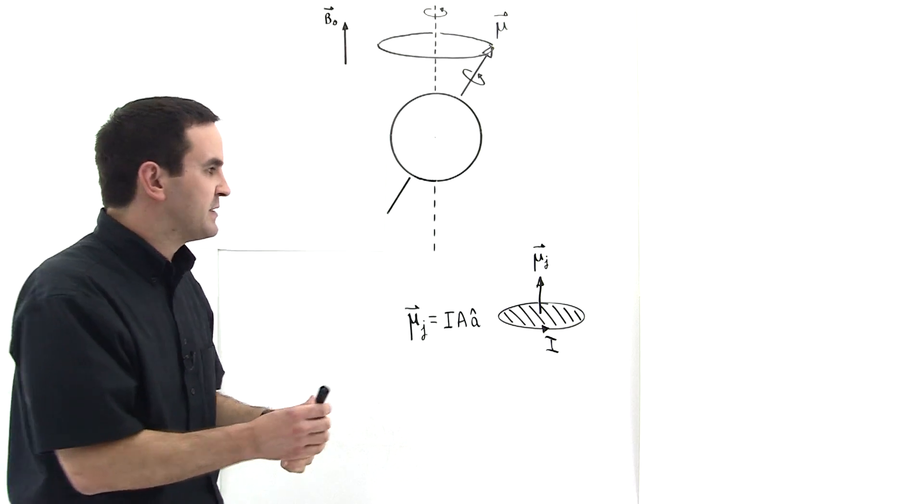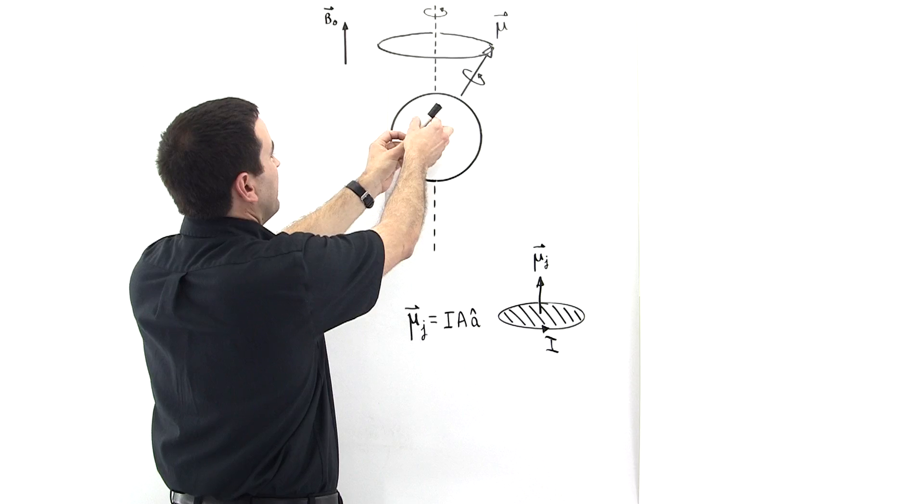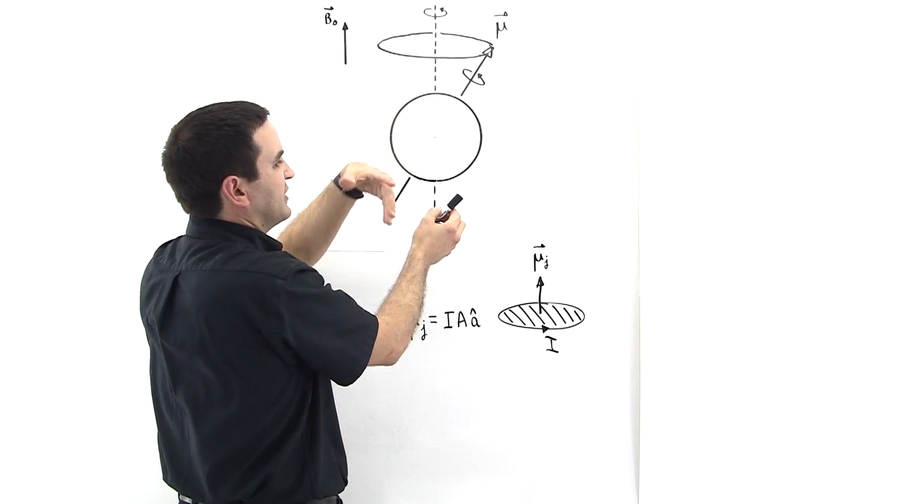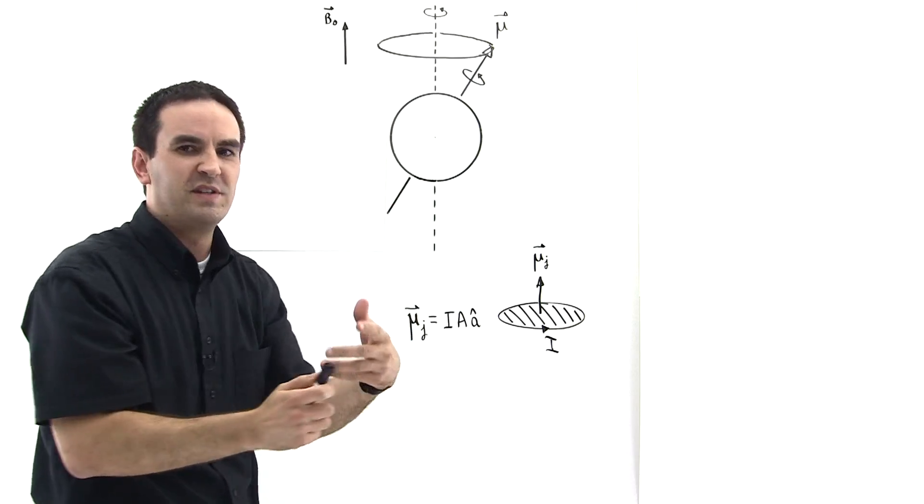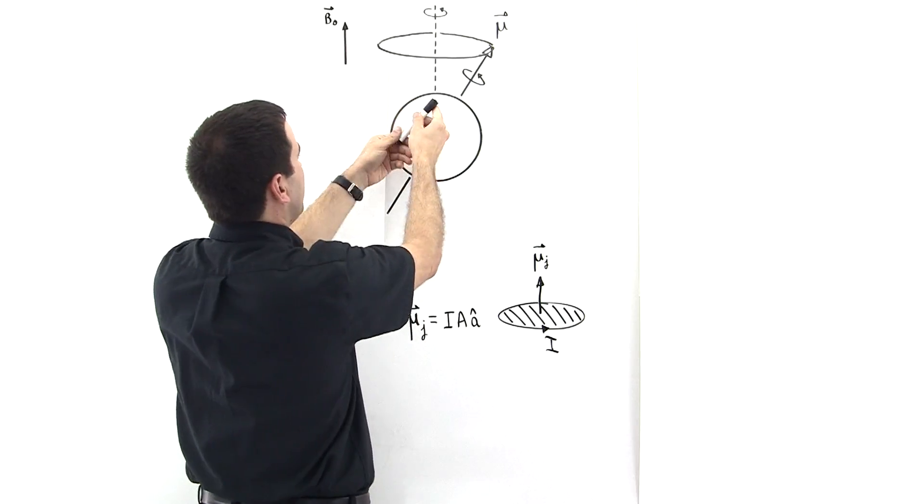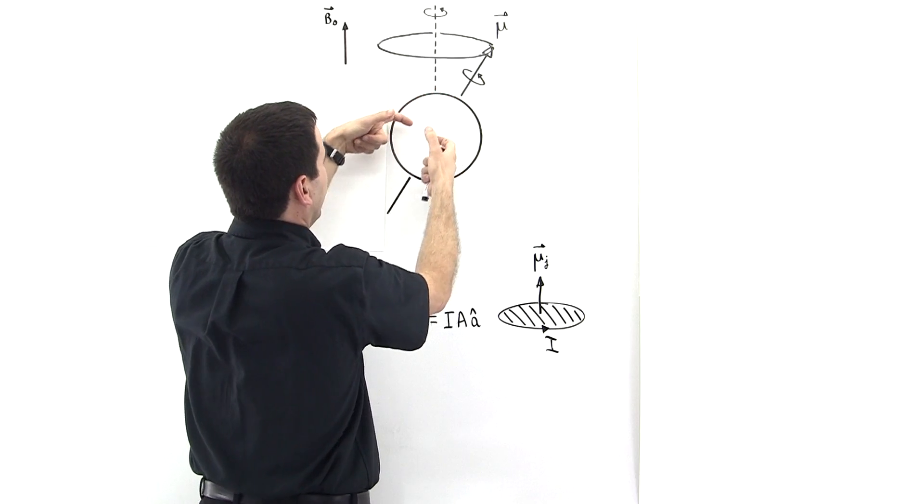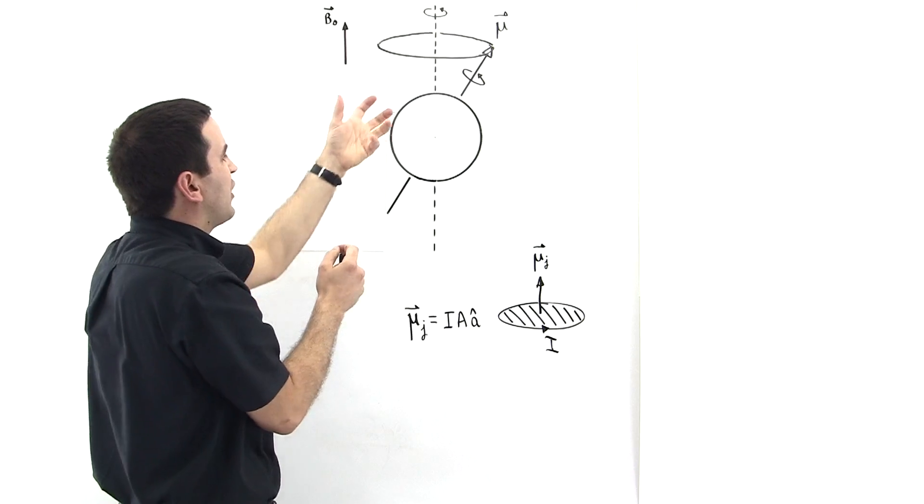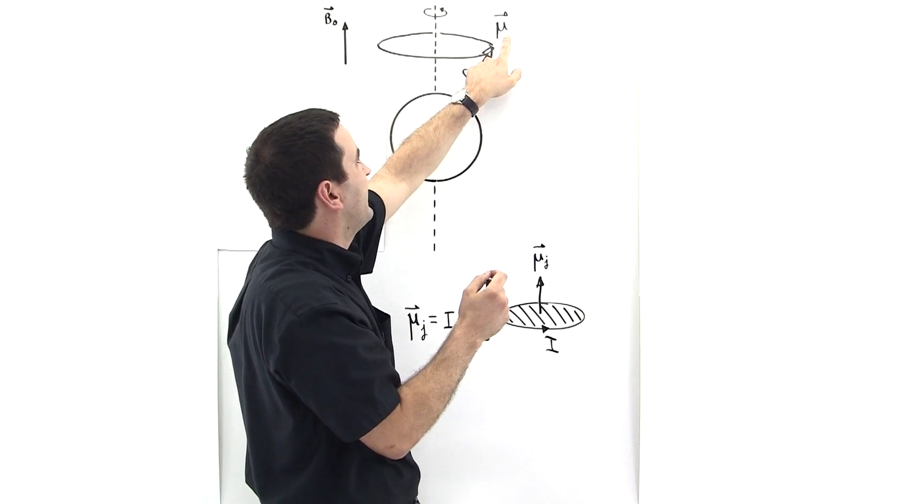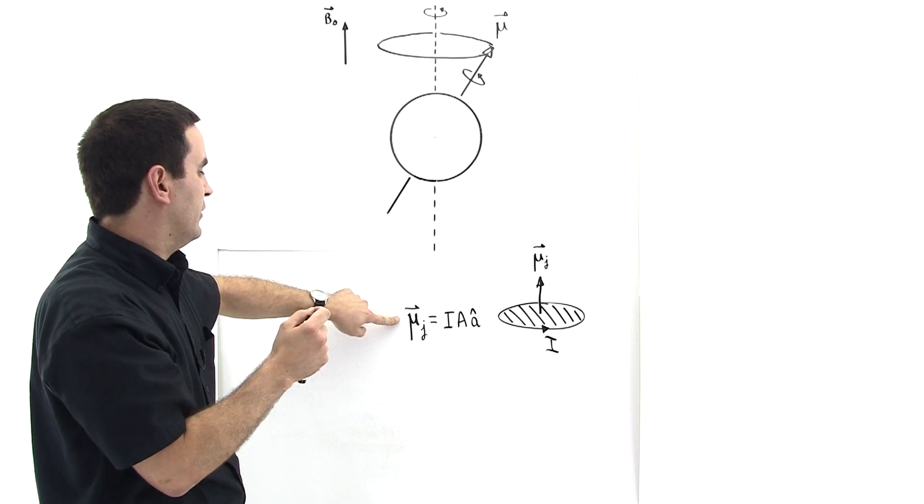A proton is believed to spin on its axis at the subatomic level. Because it's spinning, we have all this charge on the proton, 1.602 times 10 to the minus 19 coulombs. So we have charge spinning around, effectively a bunch of little current loops stacked on top of one another. These current loops all add up to give a magnetic dipole moment.